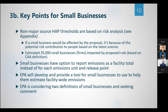For those communicating with small businesses, here are the key points to keep in mind. The non-major source HAP thresholds are based on a risk analysis we conducted — so if a small business would be affected by the proposal, it's because of the potential risk contribution to people based on the latest science from emissions coming from those businesses. Our estimate is that this would affect about 35,000 small businesses based on the Clean Air Act's definition. We also have an option so that small businesses could report emissions as a facility total instead of for each emission unit and release point, which is a burden reduction. And we have proposed that EPA would develop and provide a tool for small businesses to use to help them estimate facility-wide emissions. EPA is also considering two different definitions of small businesses and is seeking comment.